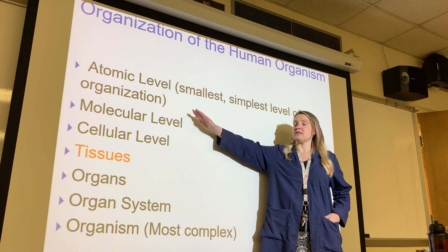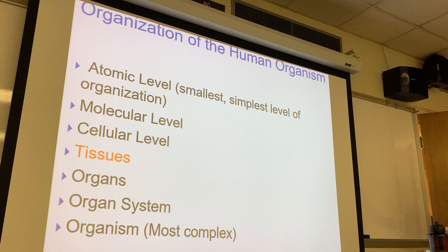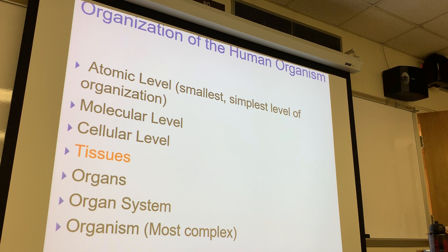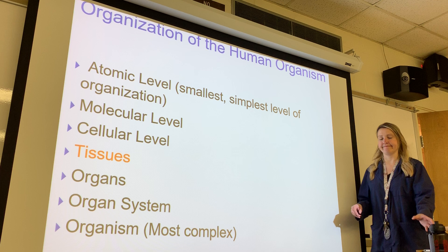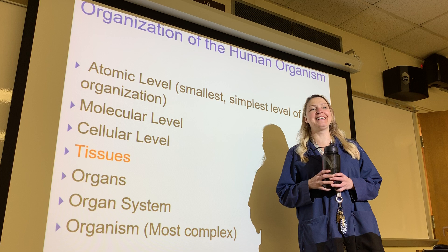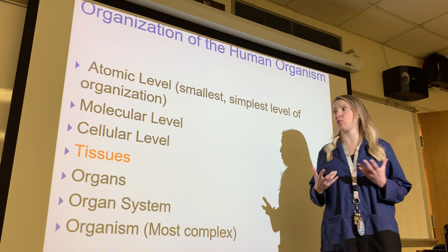Atoms come together to form molecules. What are some examples of molecules in our bodies? H2O — water — is huge. We are made of a lot of water. It's in our blood, in our cells, outside our cells in tissue fluid. We would be nothing without water.